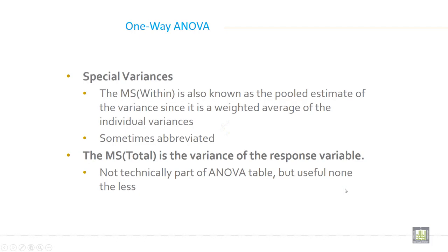Special variances: The MS within is also known as the pooled estimate of the variance since it is a weighted average of the individual variances. Sometimes abbreviated. The MS total is the variance of the response variable, not technically part of the ANOVA table but useful nonetheless.